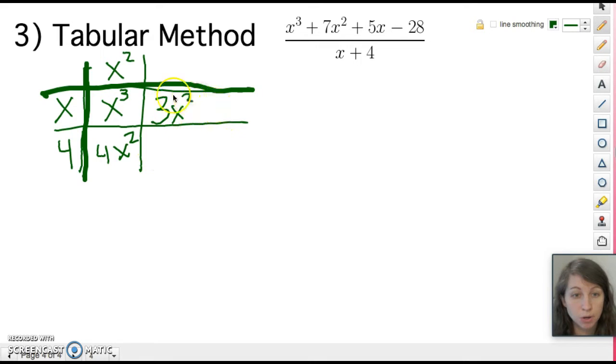So then I look at this and my grid still works the same way. So x times something equals 3x². x times 3x. Now that I've got this 3x here, I can fill in this cell. So we have 3x times 4, which is 12x. All right. So I got my 4x², 3x². That's 7x². And I'm going to look at the next term. I want to get 5x. And right now I have 12x. So what do I need to add to 12x to get 5x? Negative 7x.